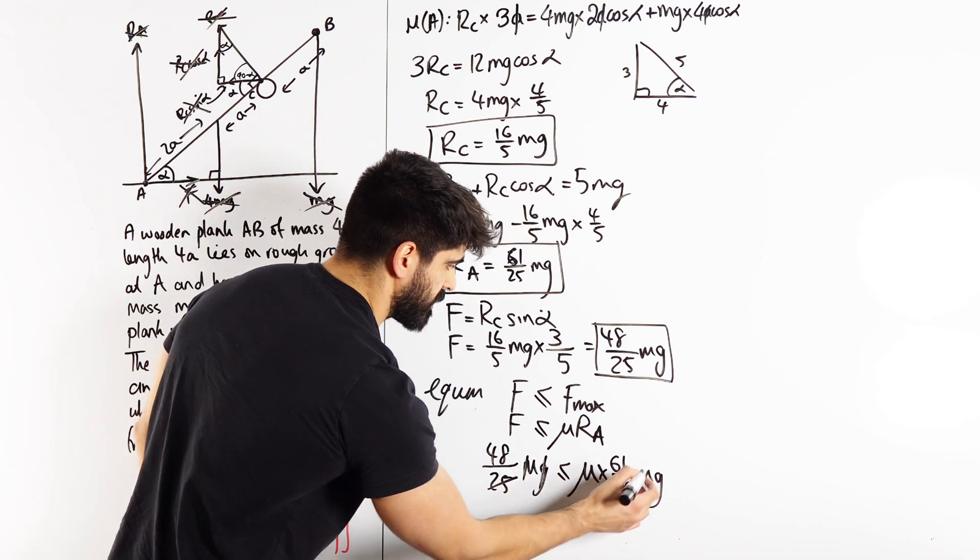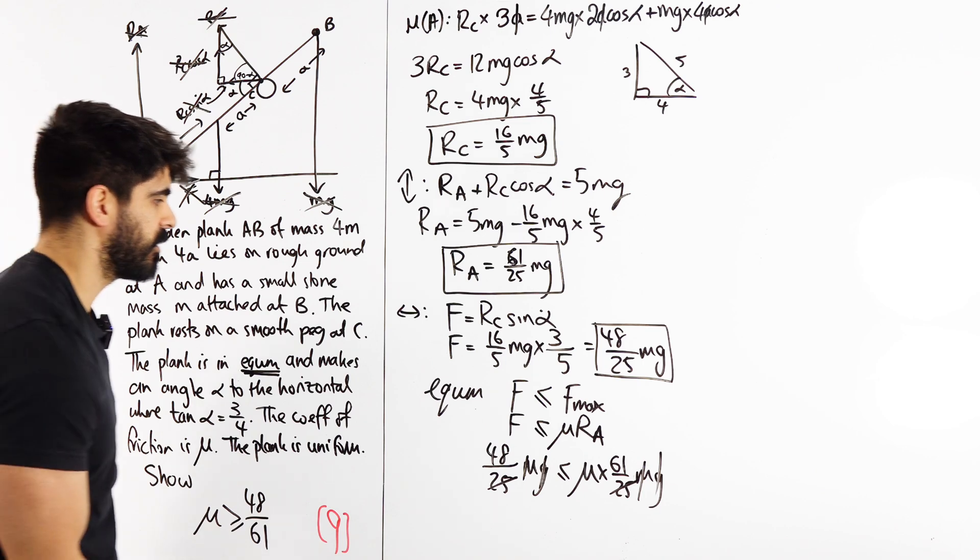F was 48 over 25 MG less than or equal to mu times RA, which was 61 over 25 MG. The 25's cancelled, the MG's cancelled. Then we divide by 61 and we get our answer.